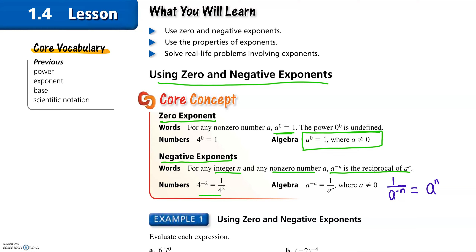For instance, four to the negative two is one over four squared. A to the negative n equals one over a to the n. And one over a to the negative n is a to the n. They're reciprocals of each other — a to the negative n and a to the n are reciprocals.